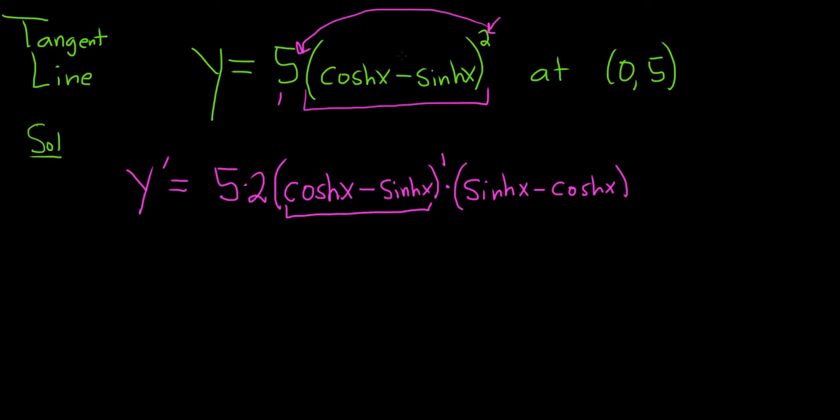So again, the 5 hangs out, we bring the 2 down, put it in the front, subtract 1, that gives us a 1. And then we multiply by the derivative of the inside function.